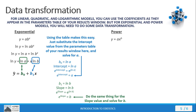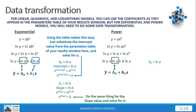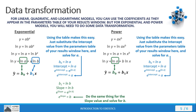We can look at the power equation. Using the general form, we run the same process through with the power equation and compare it with the general form for the linear model. Again, a is just going to be e raised to the intercept power, and then b is going to be similar to b1 — we set those two equal, and that's the number we actually use for b, which is the slope.